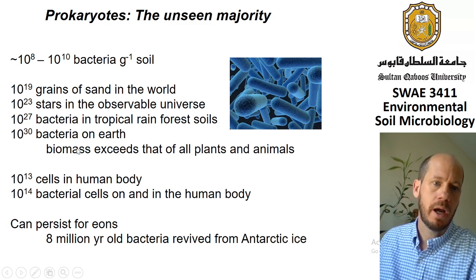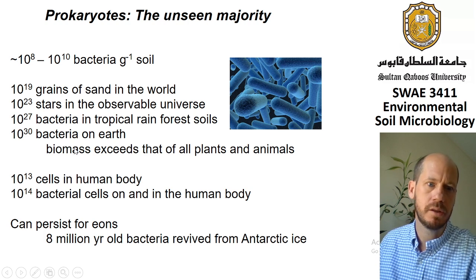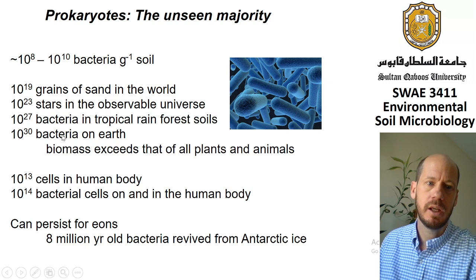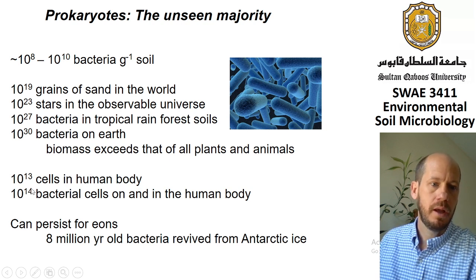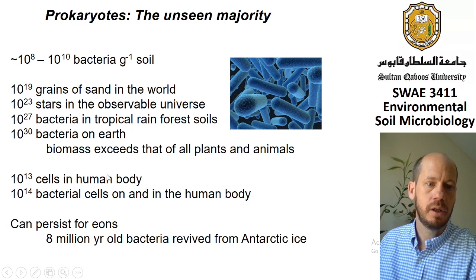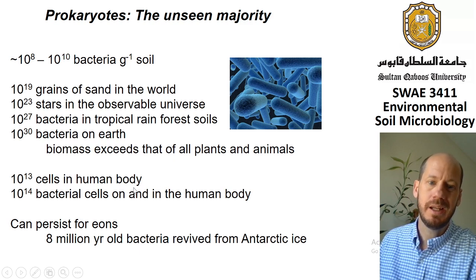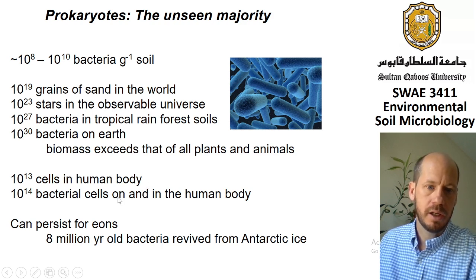The biomass of bacteria is also very high — usually the biggest amongst all microbes in soil and amongst all living beings in soil, though in some conditions the biomass of fungi can be a bit higher. We have about 10¹³ human cells in the body, and we can have up to 10¹⁴ — ten times more — bacterial cells on and in the human body, counting all microbes on our skin and in our digestive tract.